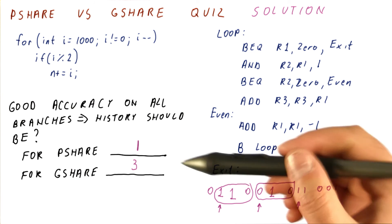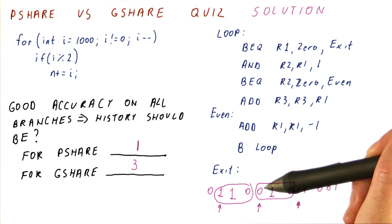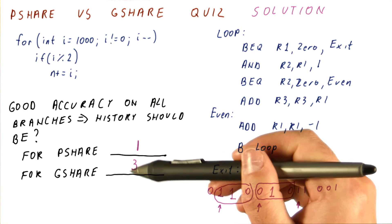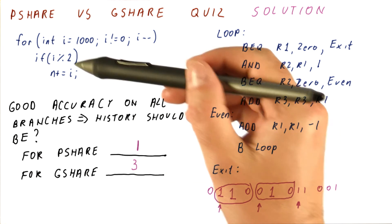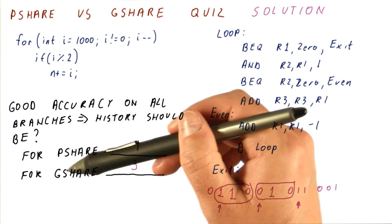As you can see, G-share can do a similar job to P-share, except that it needs a longer history, even for branches that are actually kind of self-determining. Note that G-share can also do those correlative branches that P-share cannot do.